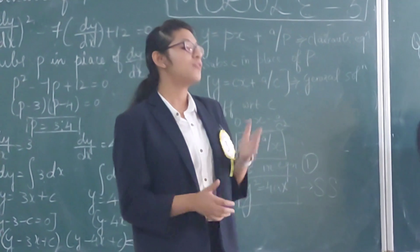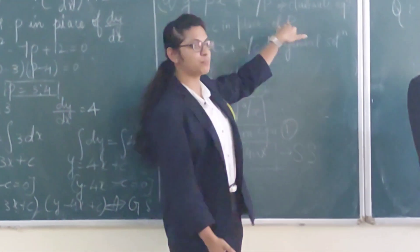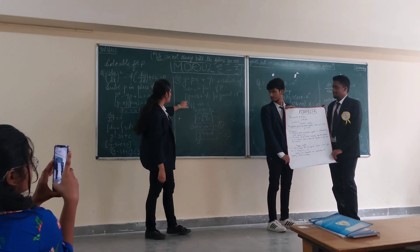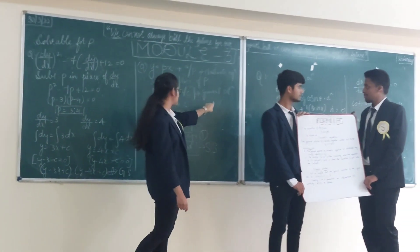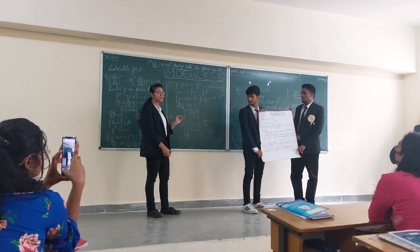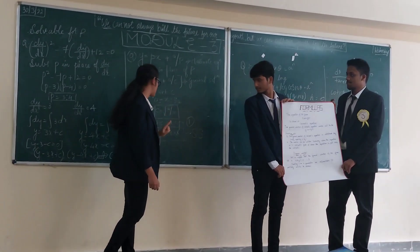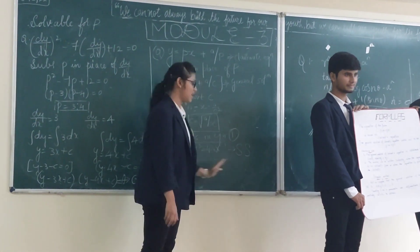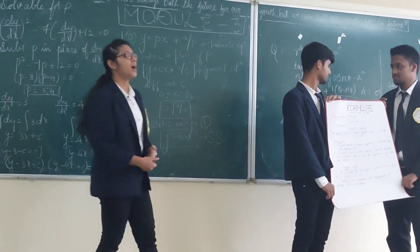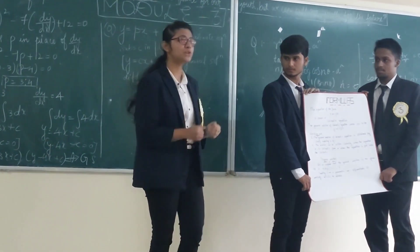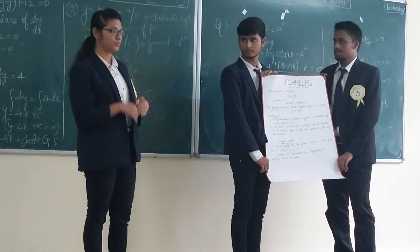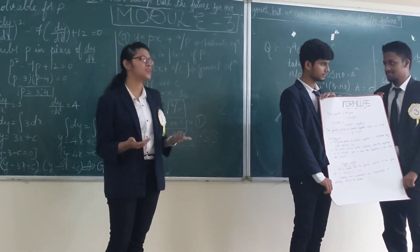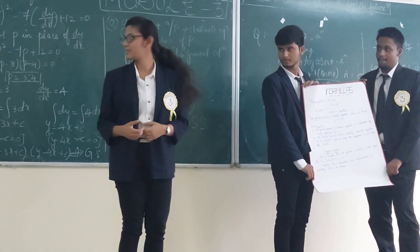For the Clairaut equation, y = px + a/p, we substitute c in place of p to get the general solution y = cx + a/c. To find the singular solution, we differentiate with respect to x to get 0 = x − a/c², giving c = √(a/x). Substituting back, we get y² = 4ax as the singular solution. There is also the reducible form of the Clairaut equation, which introduces new parameters where X = x² and Y = y², allowing it to be reduced to standard Clairaut form.